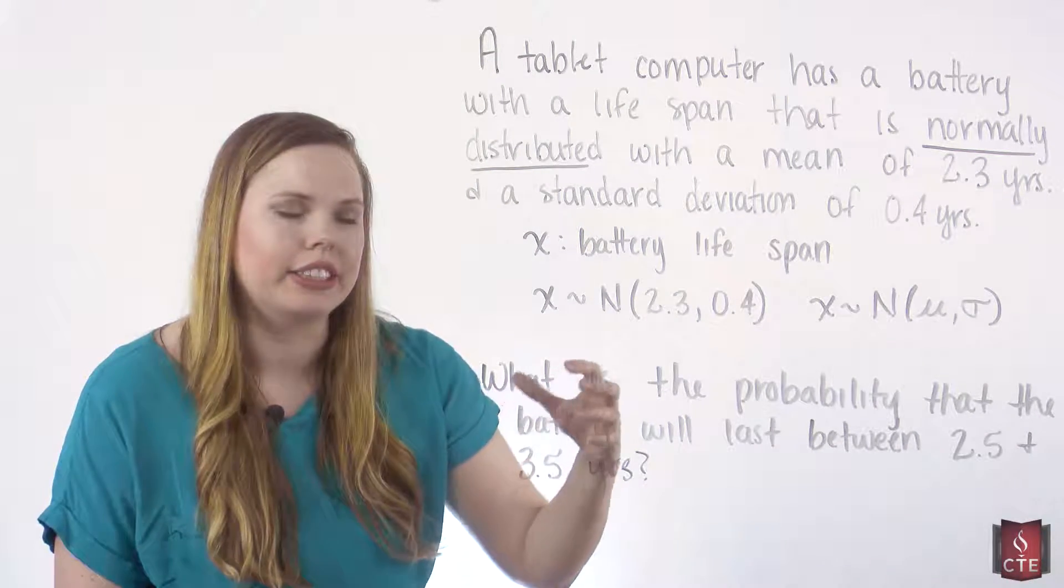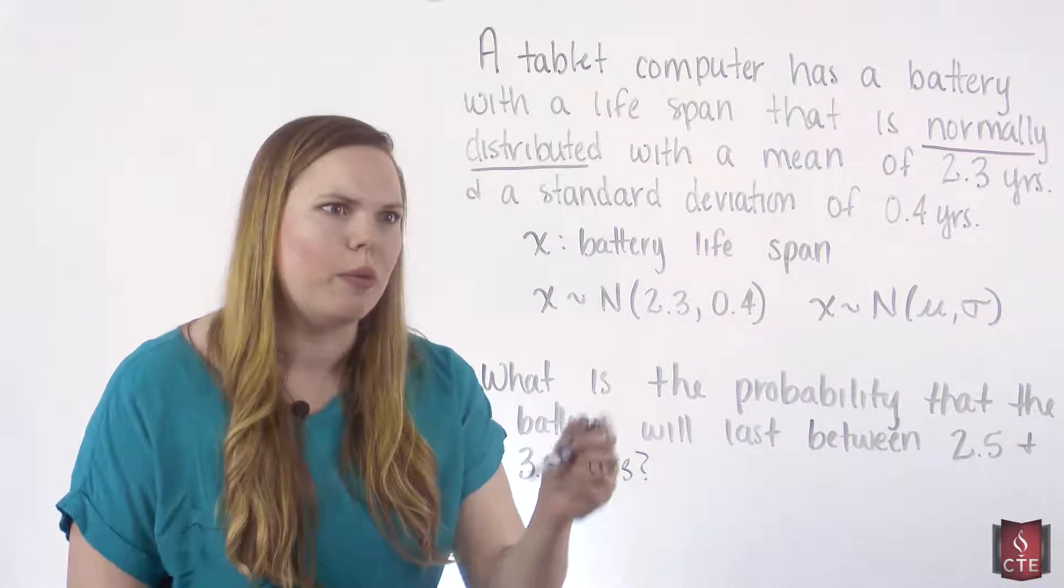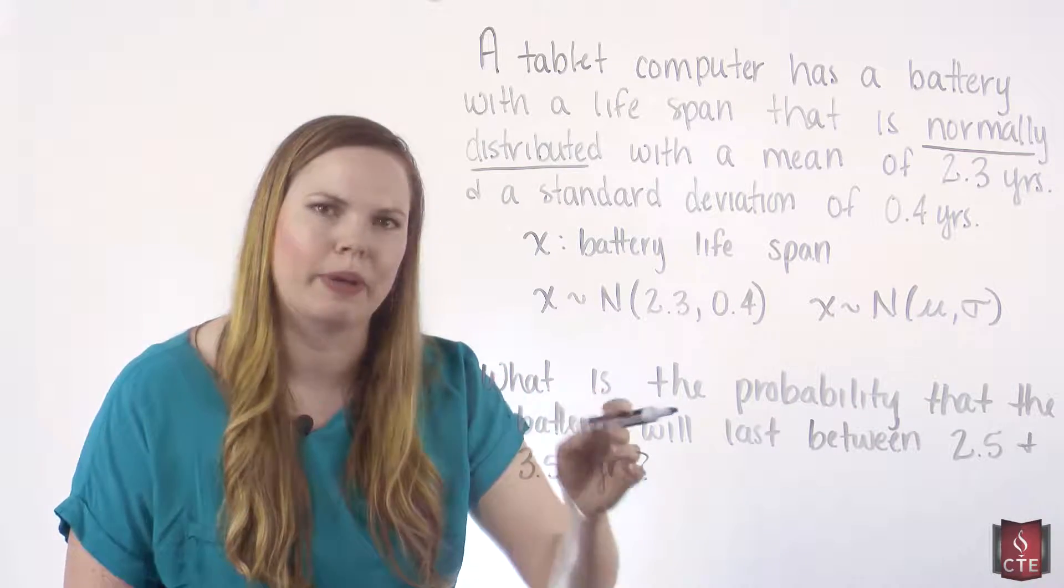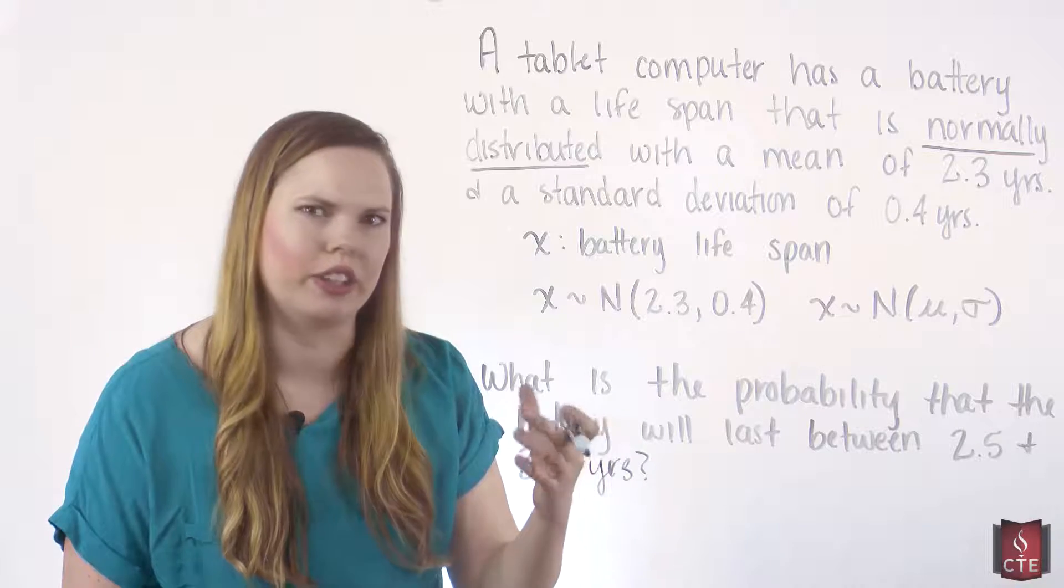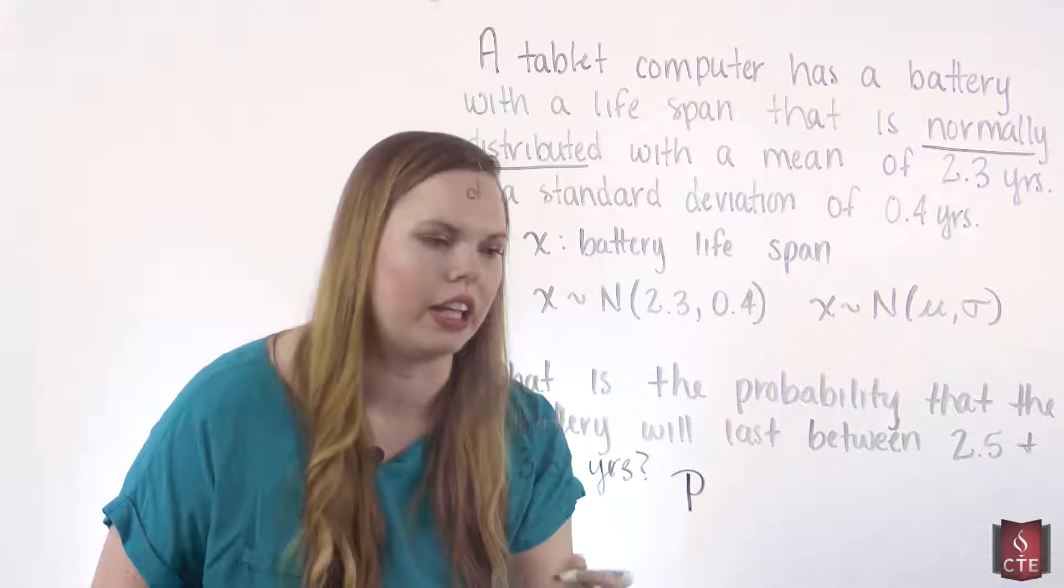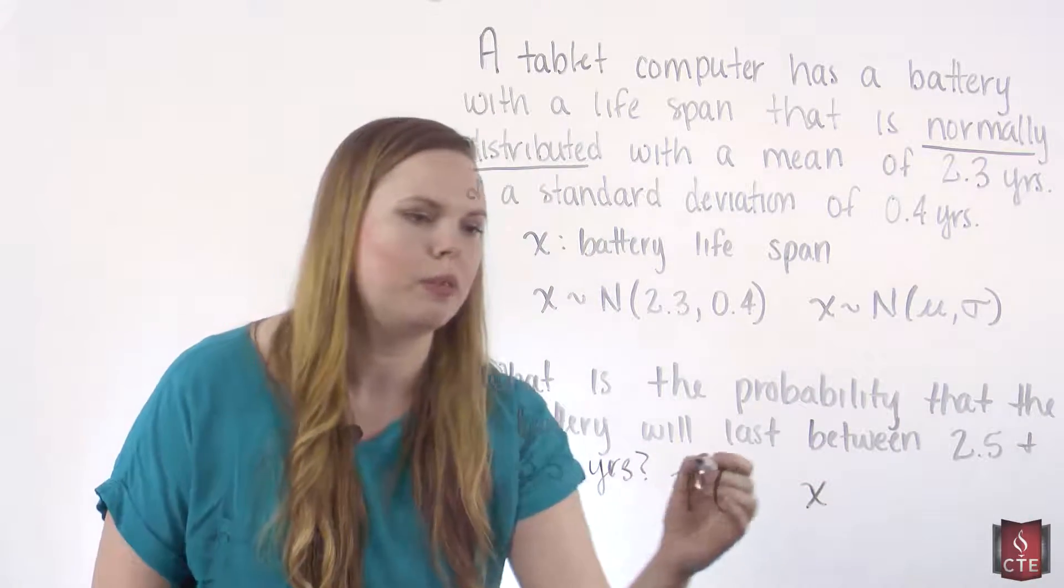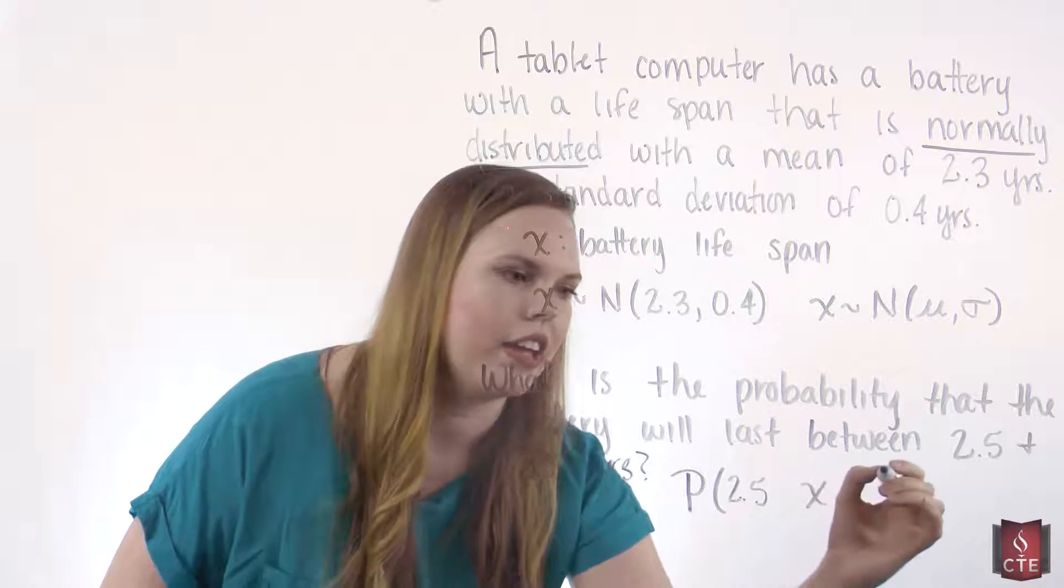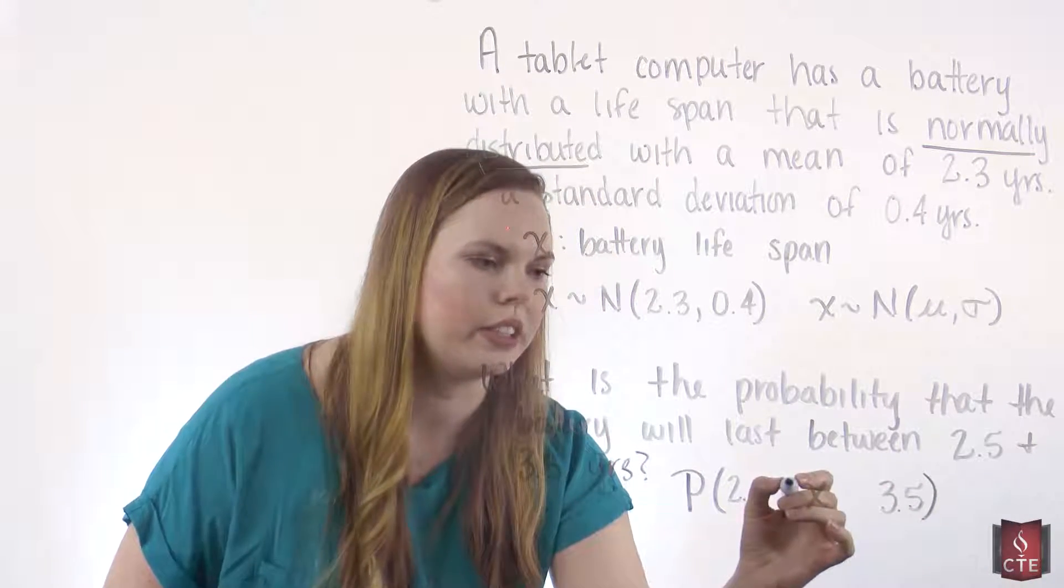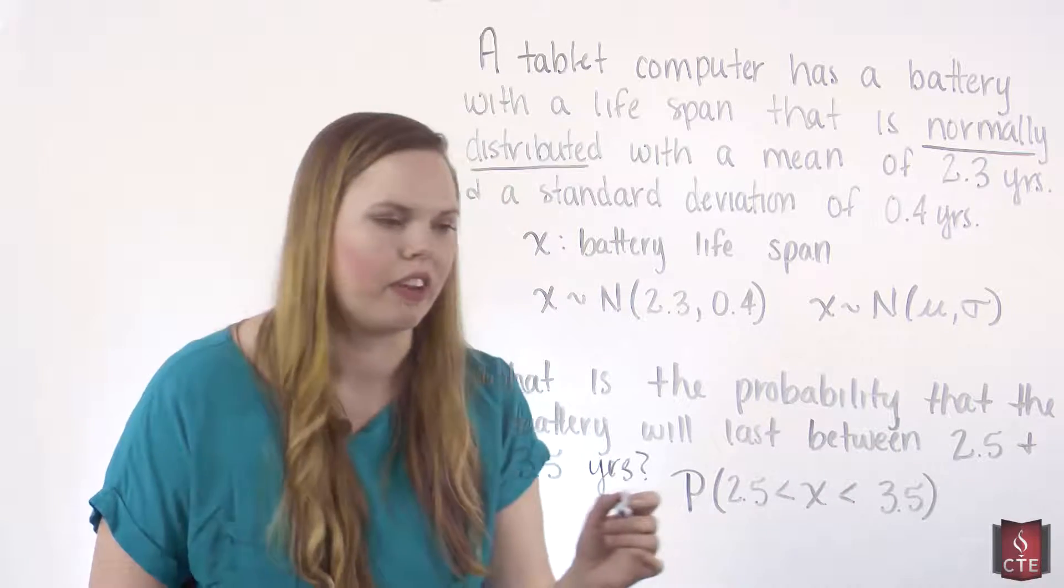Once again, we can just simply take this and put it into numbers really easily. We know that our x is our battery lifespan, and that's what we're asking about here. Is the battery lifespan going to be between these two values, or what is the probability that it will be? So we're just simply asking, what is the probability that this random variable x is going to be between 2.5 and 3.5? So in between, we use these symbols. We want x greater than 2.5, less than 3.5.